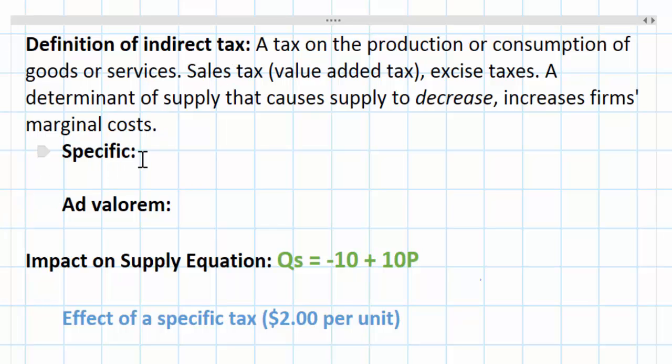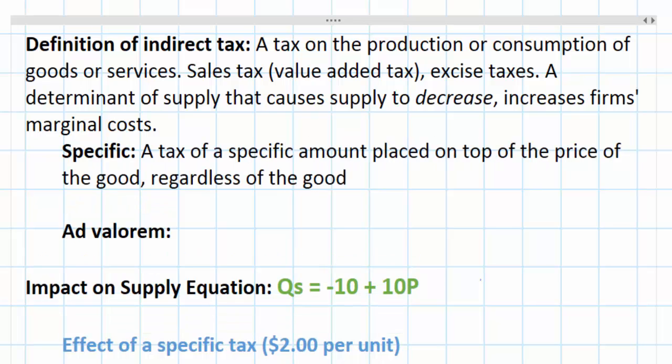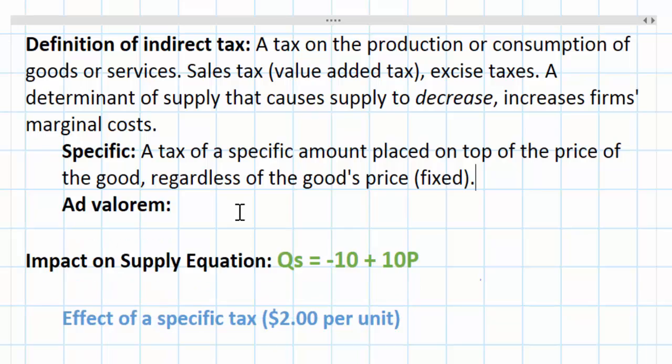Let's now distinguish between specific taxes and ad valorem taxes. The only difference between these two is that a specific tax refers to a tax that is a dollar amount or a particular amount placed on top of the price of a good. It does not change when the price of a good changes. The tax value is fixed and does not vary with the price of the good.